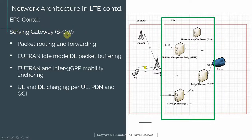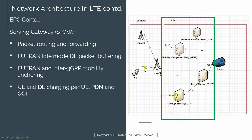Moving on — the Serving Gateway, or SGW, is responsible for packet routing and forwarding. Recalling our EUTRAN discussion, there is a user plane link between the eNodeB and the SGW. The SGW ensures that packets meant for a given UE are delivered to that UE and vice versa — it essentially acts as a packet router and forwarder.